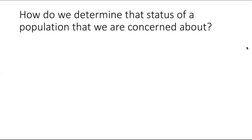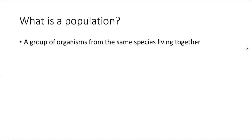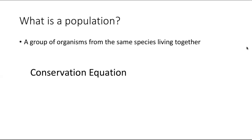So how do we determine the status of a population that we might be concerned about? First, we want to think about what a population is. For our purposes, a population is just a group of organisms from the same species that are living together and have the potential to interbreed with each other. The first thing we can do to understand a population is write down what we call the conservation equation — a very simple equation to get us oriented to what's going on.